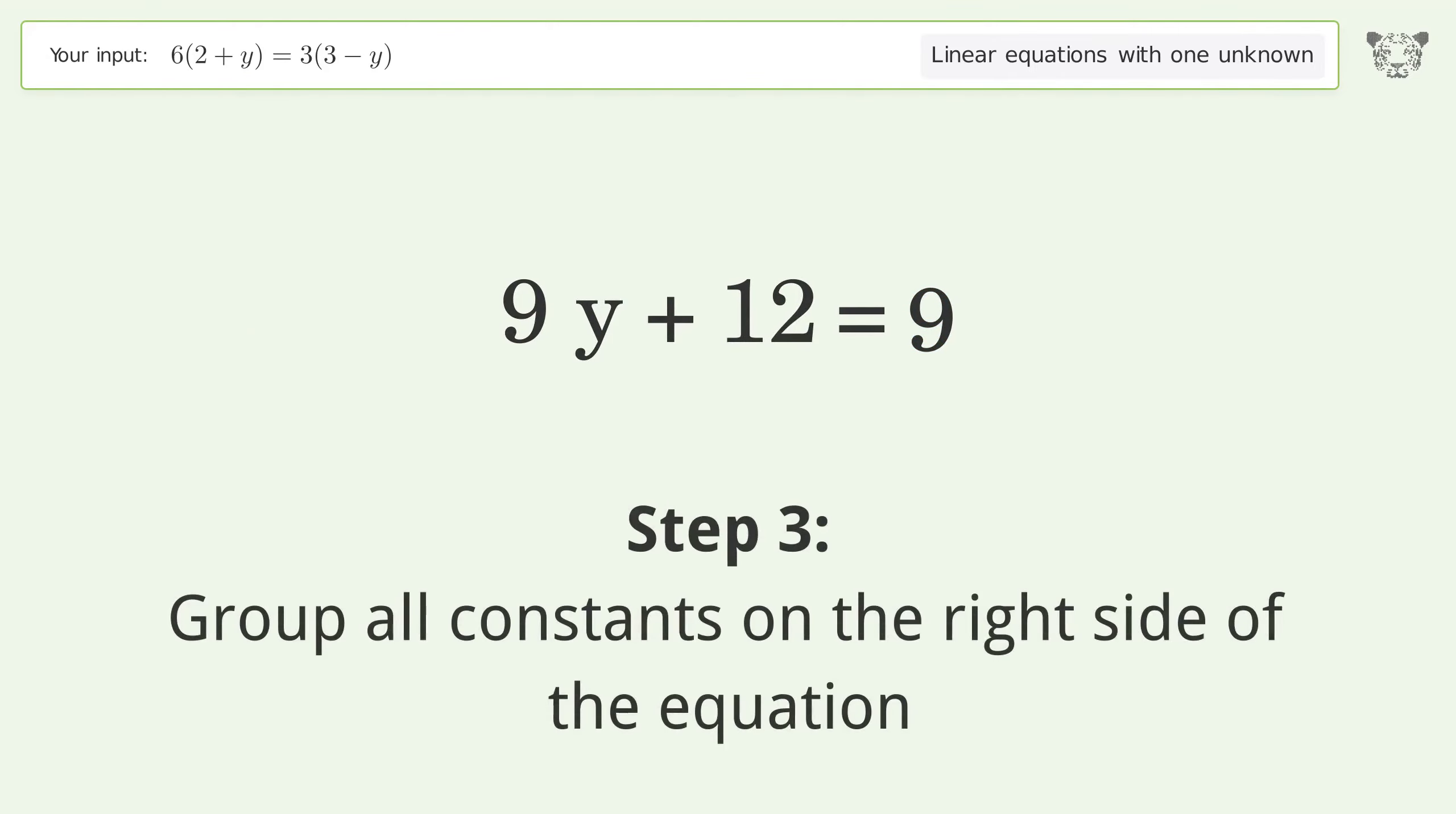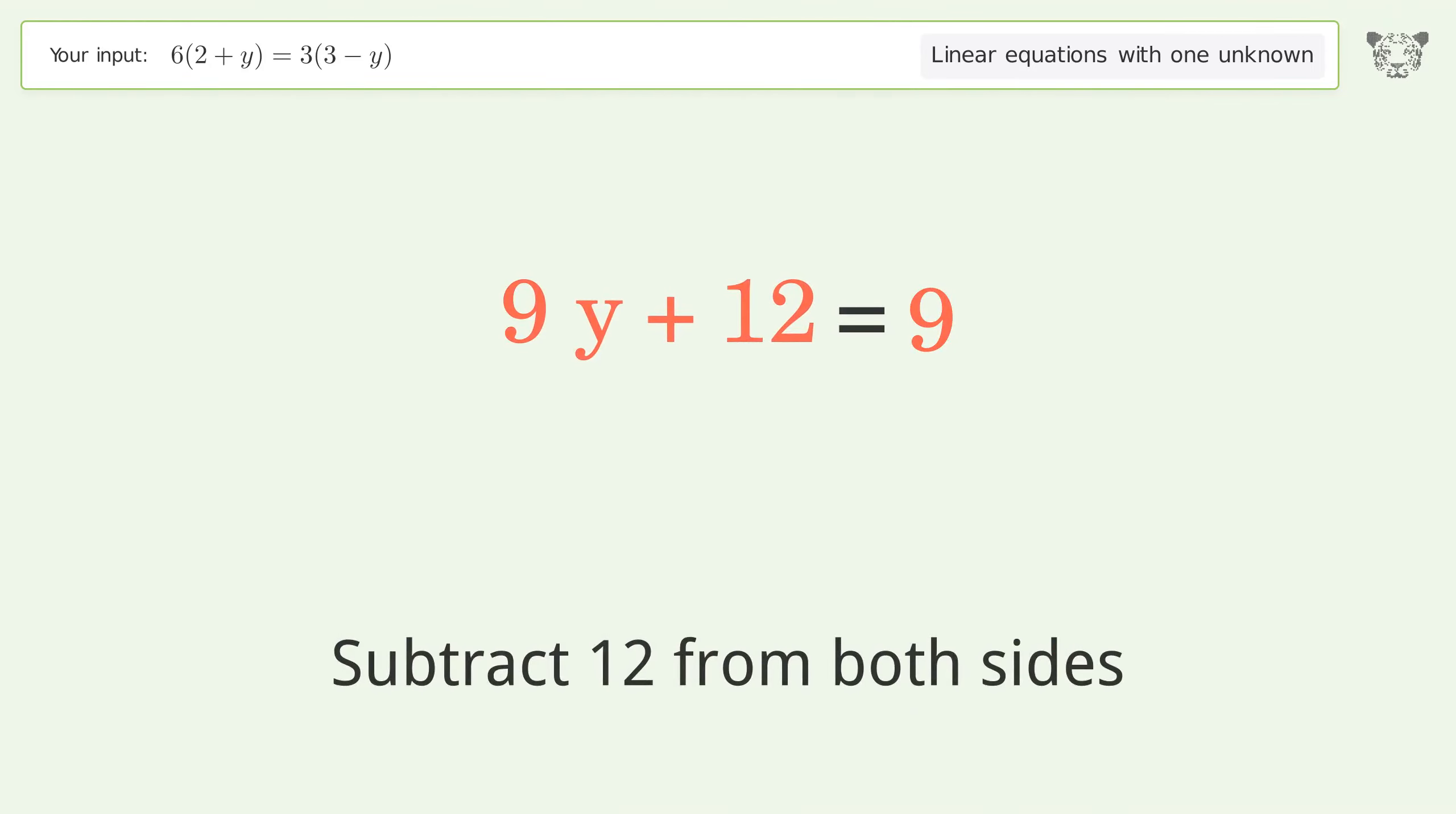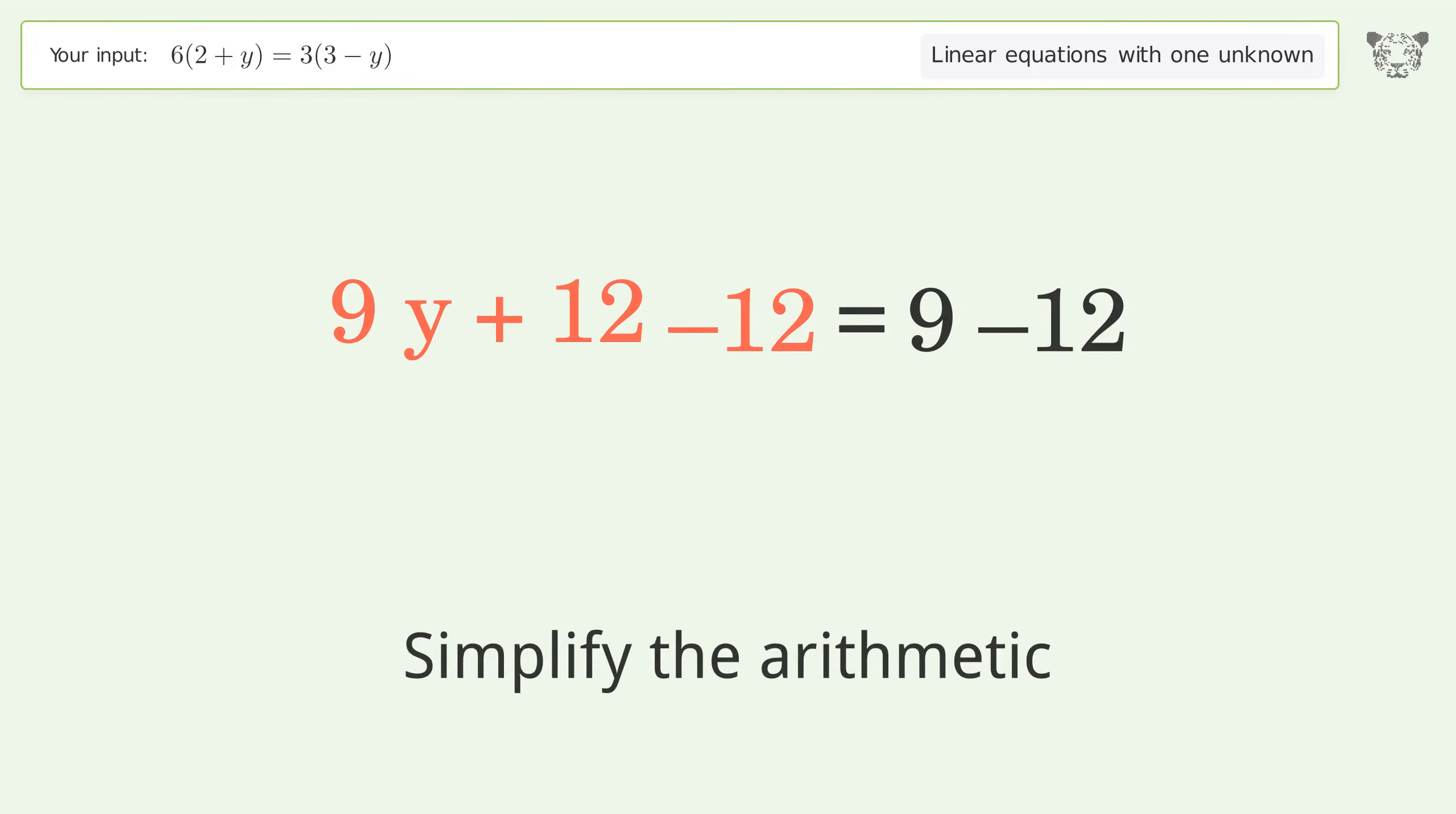Group all constants on the right side of the equation. Subtract 12 from both sides. Simplify the arithmetic.